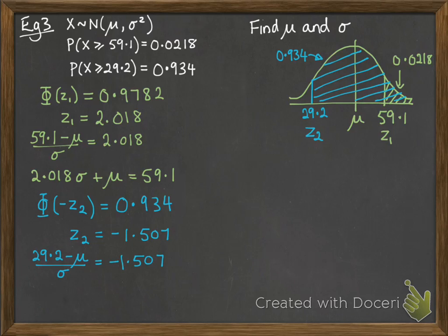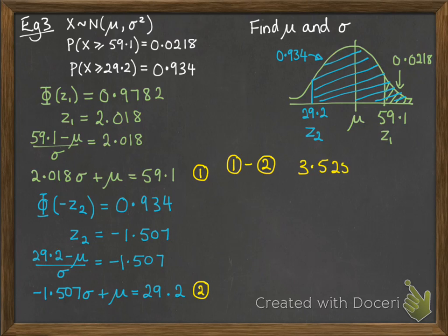So put it into the formula again, rearrange it, and now we have two equations that we can solve simultaneously. So from this one we can get sigma, and then substitute it into the first one to get mu.